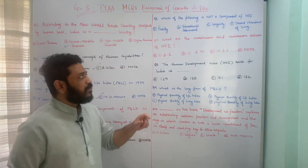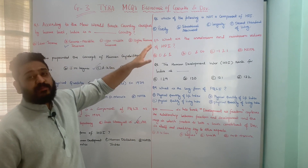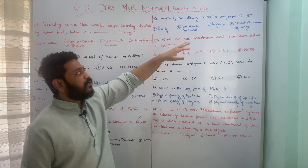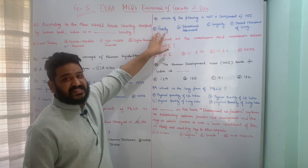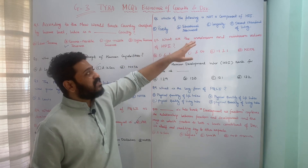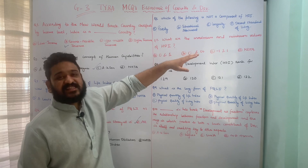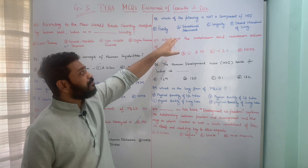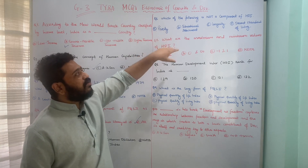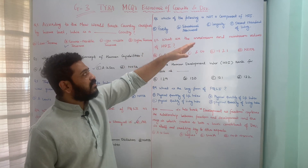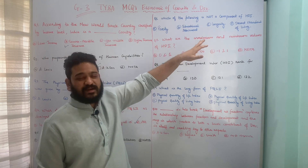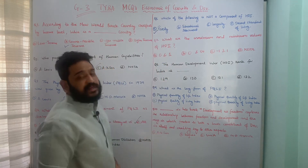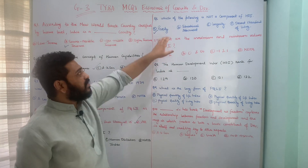The next question asks which of the following is not a component of HDI: poverty, educational attainment, longevity, or decent standard of living. This is a 'not' type question. Poverty is not a component of the Human Development Index. The other three — educational attainment, longevity, and decent standard of living — are components of HDI. Therefore, option A is the correct answer.